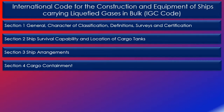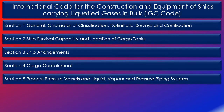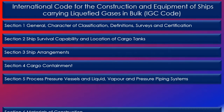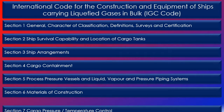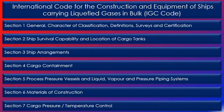Section 5 on process pressure vessels and liquid vapor and pressure piping systems sets out the requirements for piping fabrication and joining details, besides setting out the requirements for testing of piping, cargo system valving, and also the requirements of ship's cargo hoses. Section 6 on materials of construction sets out the requirements for materials of construction, welding, and non-destructive testing of welds.